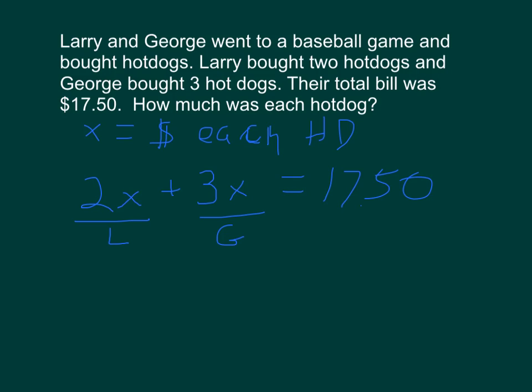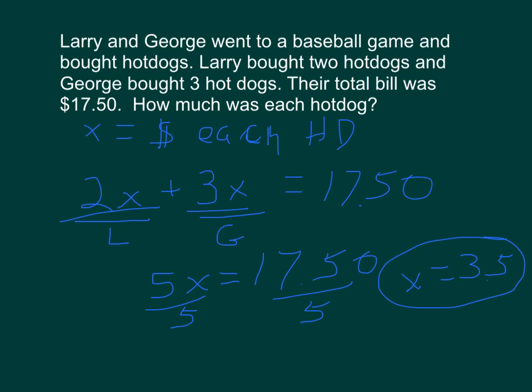This is just representing Larry and George. We're not dividing by L, so don't be confused by that. We do have 2x plus 3x gives us 5x. That's five hot dogs total equals the price of $17.50. Now we're going to divide by 5 to find out what x is, and x equals $3.50. So it looks like hot dogs were $3.50 each. If you go to a professional baseball game, they're going to be at least that much. Larry bought two hot dogs, his total bill was $7. George bought three hot dogs, his total bill was $10.50. That kind of makes sense and checks out okay.